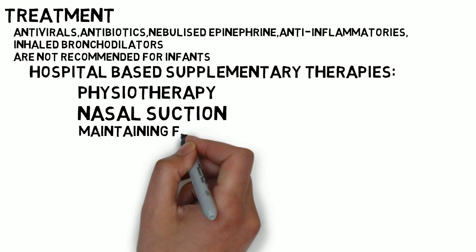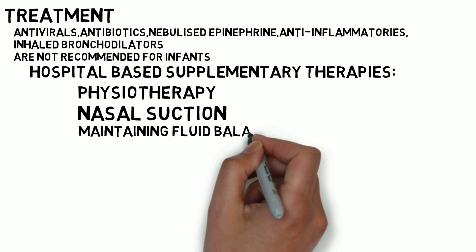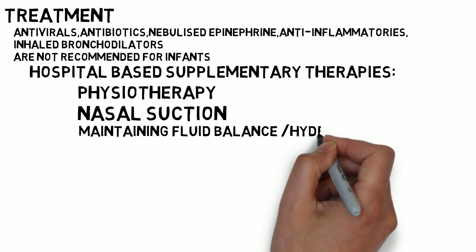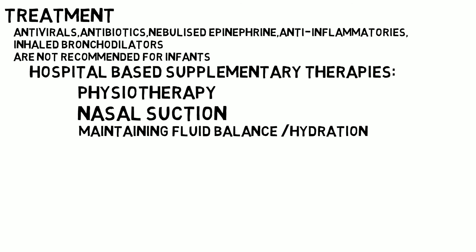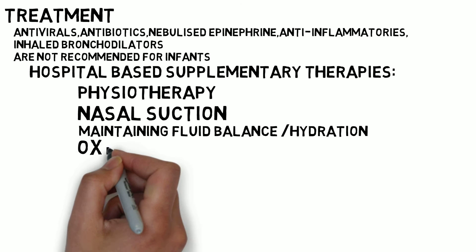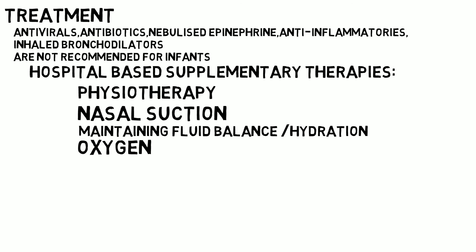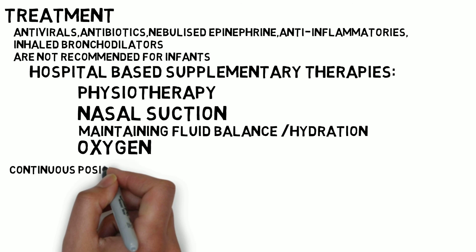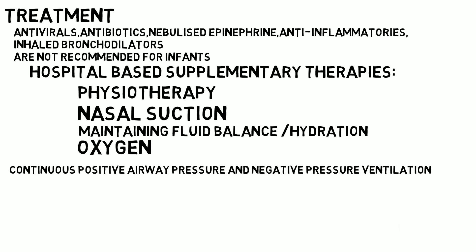Maintaining fluid balance: Small frequent feeds, nasogastric or orogastric feeding, or intravenous feeds should be considered. Infants with oxygen saturation less than 92%, or those with severe respiratory distress, should receive supplemental oxygen by nasal cannula or face mask. Continuous positive airway pressure and negative pressure ventilation, and early discussion with the pediatric intensive care unit, should be considered in all patients with severe respiratory distress or apnea.